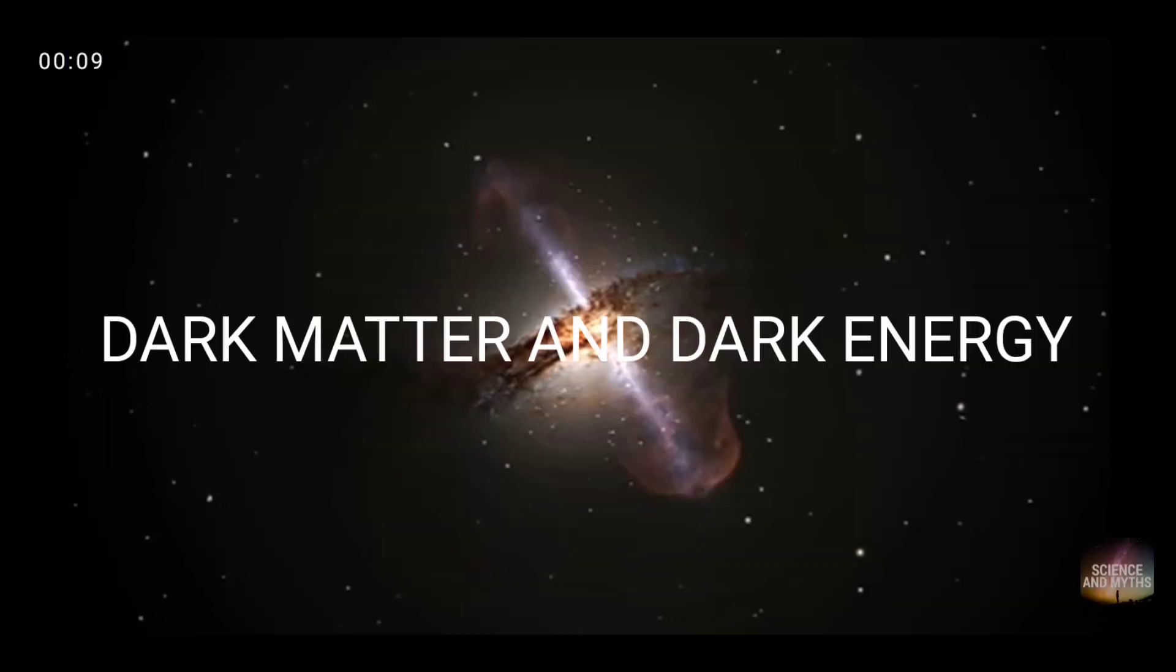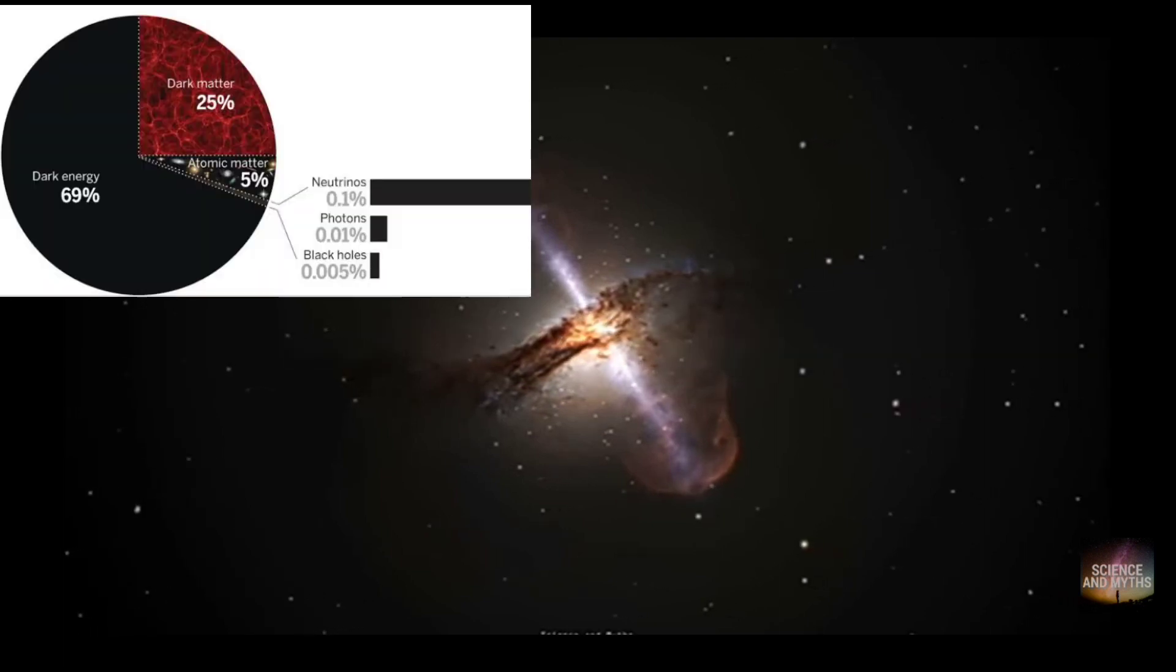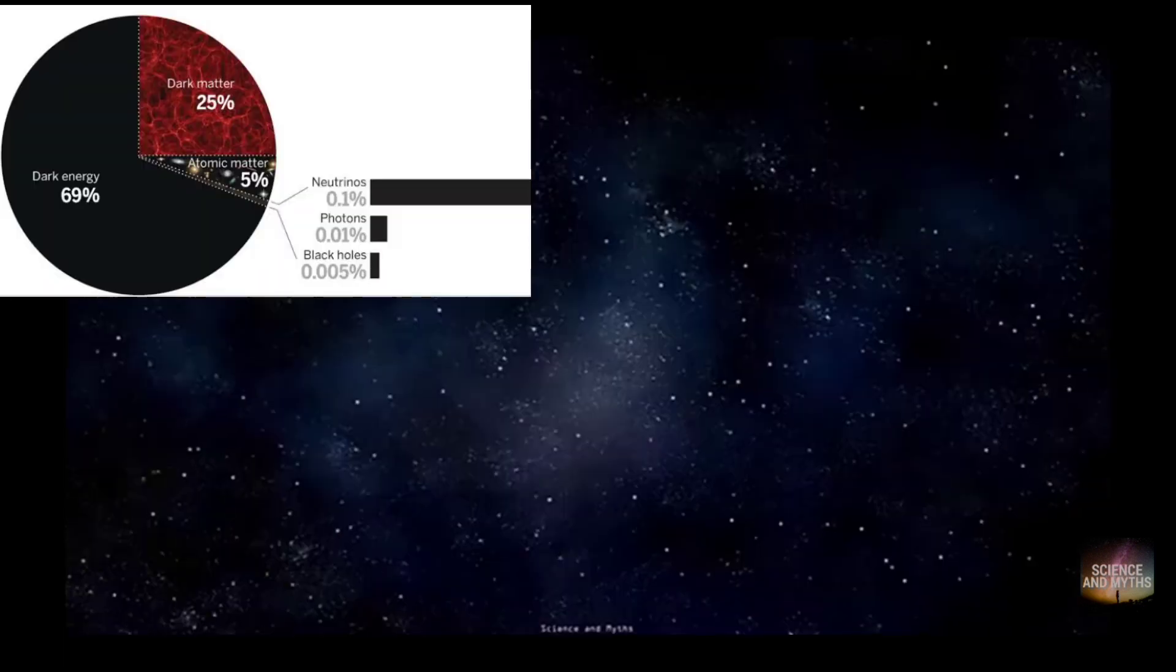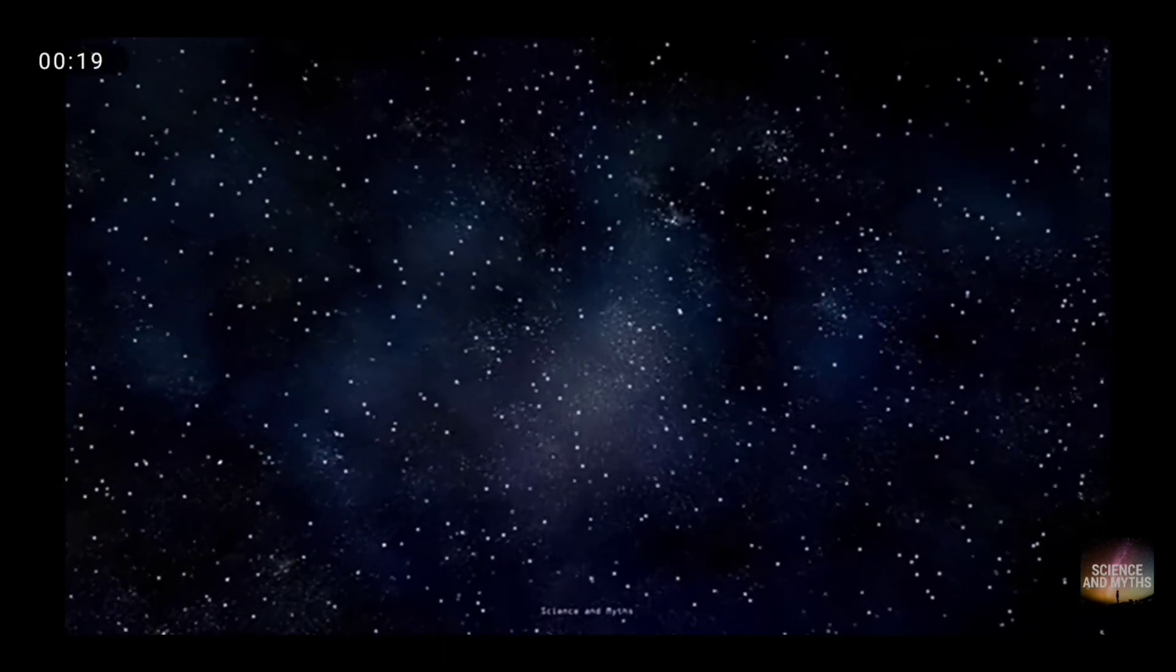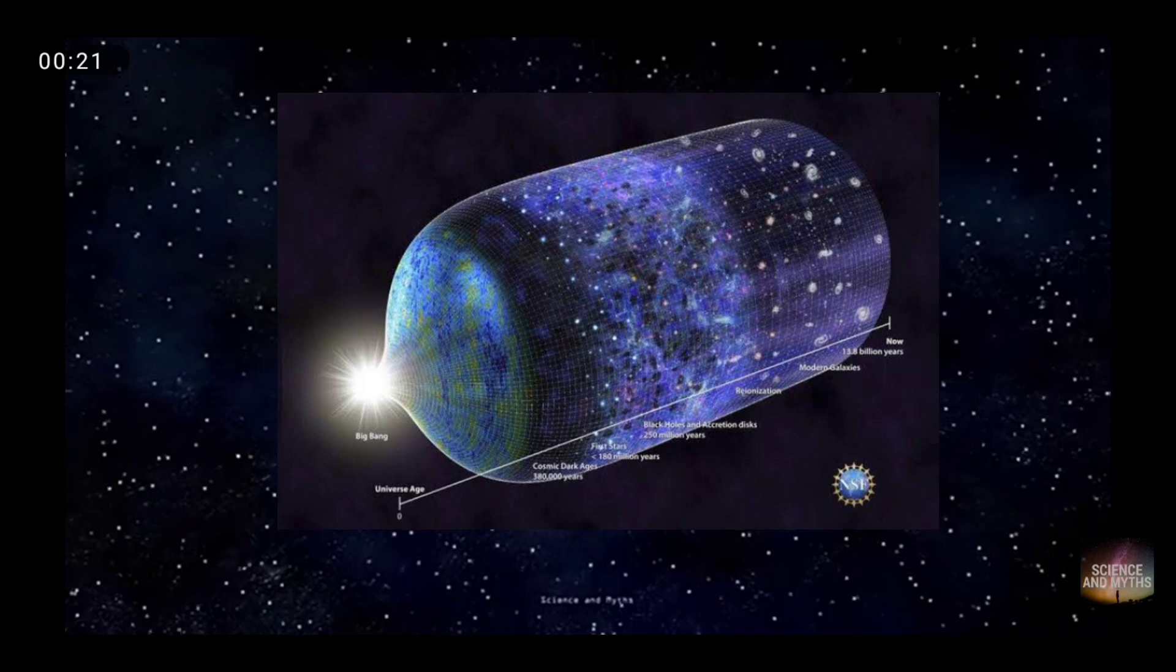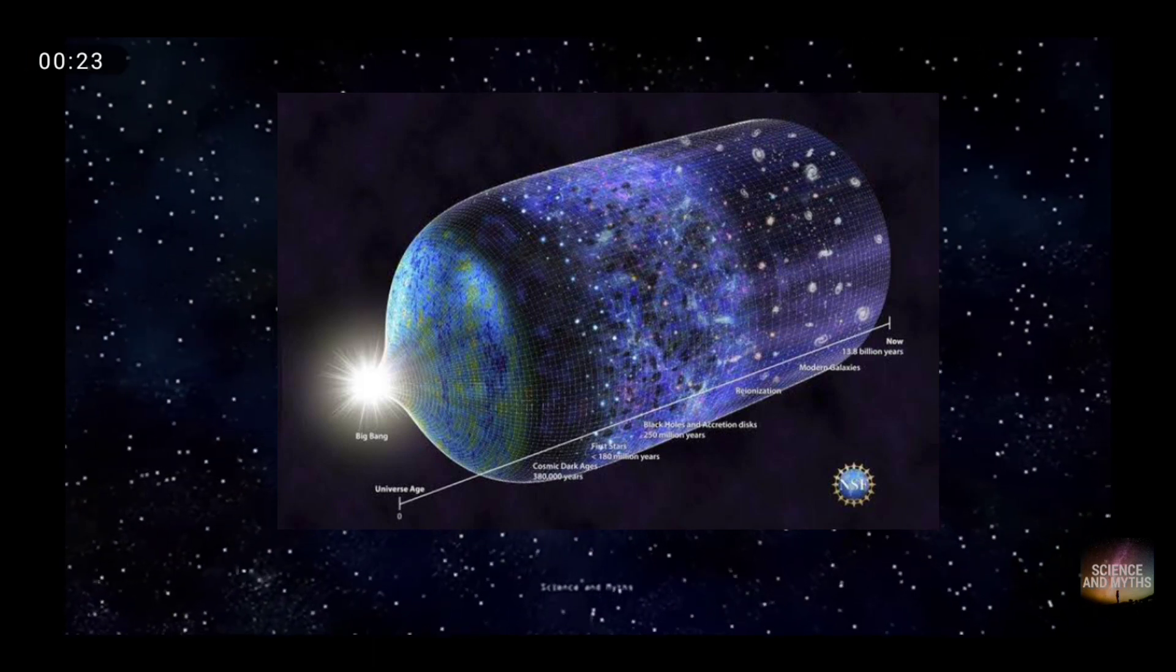It turns out that roughly 68% of the universe is dark energy. Dark matter makes up about 27%. The rest, everything on Earth, everything ever observed with all of our instruments, all normal matter, adds up to less than 5% of the universe.